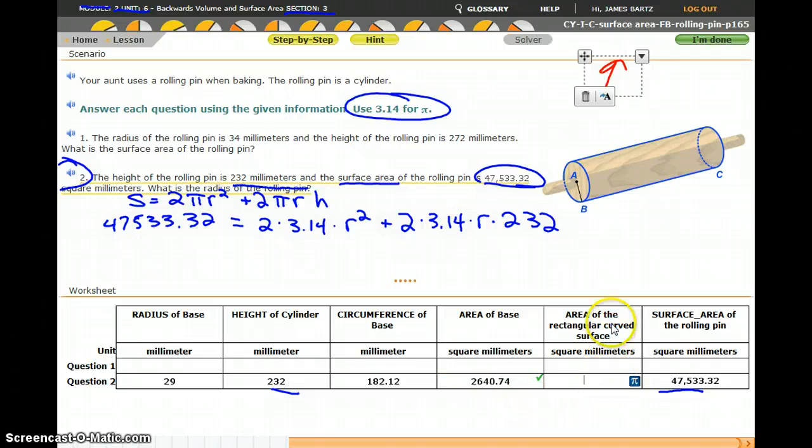And then the area of the rectangular curve surface, again that's the lateral area, the second portion of the surface area formula, so 2 times 3.14 times 29, that's the circumference, times the height, which was 232.